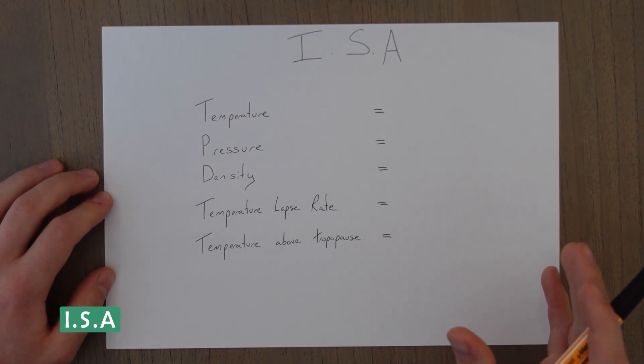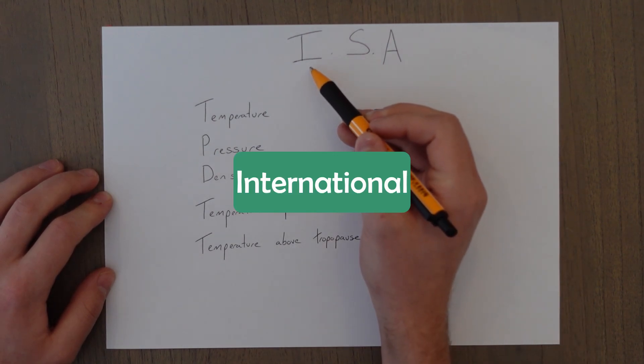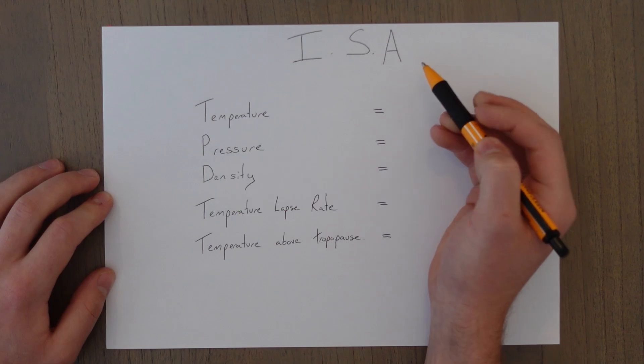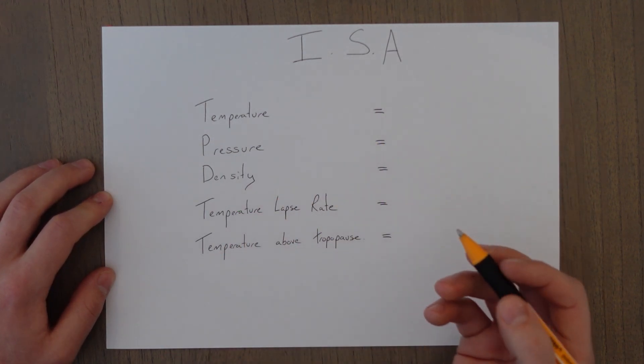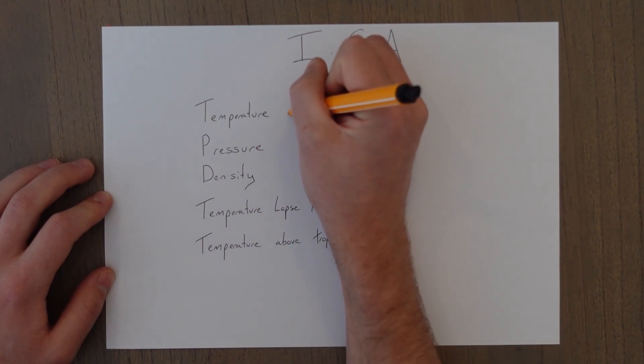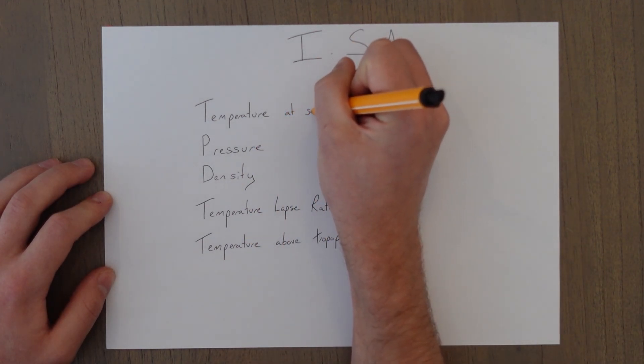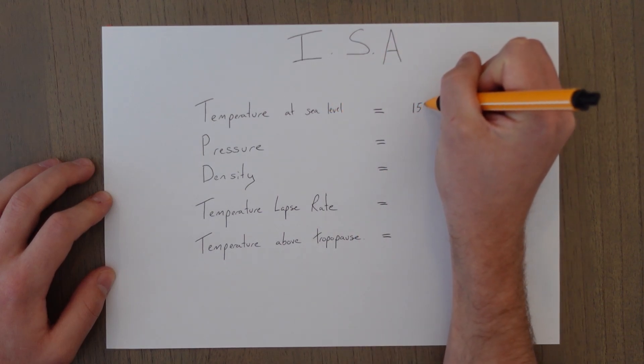The elements that we've just looked at vary vastly all over the globe and from day to day. So aviators use an international standard atmosphere, which includes all these elements to simplify calculations and it is as follows.